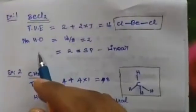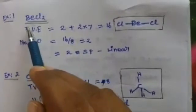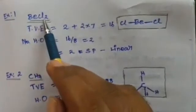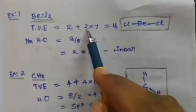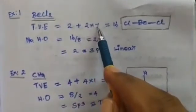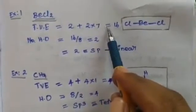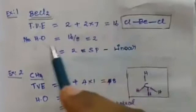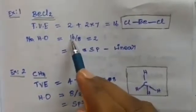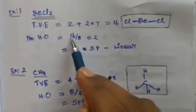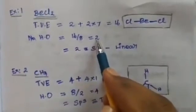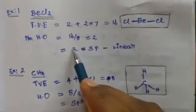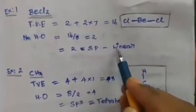Let us discuss a few examples. Example 1: beryllium dichloride (BeCl₂). Beryllium is the central atom; chlorine is the surrounding atom. Beryllium has 2 valence electrons, and there are 2 chlorine atoms each with 7 valence electrons, giving a total of 16 valence electrons. Since 16 is greater than 8, we divide by 8, giving 2 hybrid orbitals. Therefore hybridization is sp and geometry is linear.